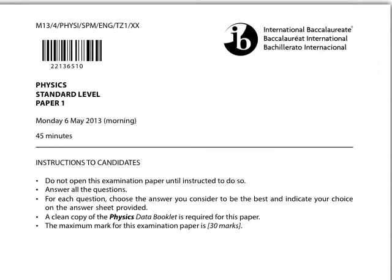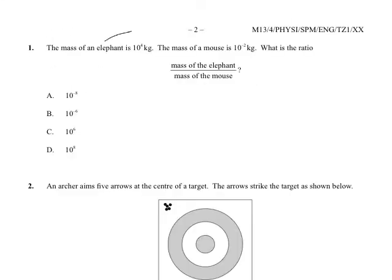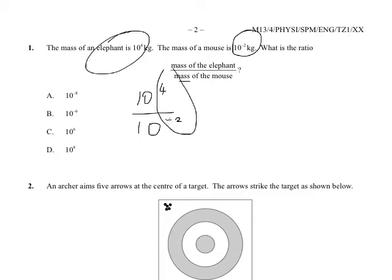Okay, so this is the mock paper, which happens to be May 2013. Please excuse the firecrackers outside, it is Diwali, and the fact that I've got a cold and I'm sniffing a lot. I'm going to start with question number one, which is a nice simple start. We have a mass of elephant ten to the power of four, and we're dividing it by the mass of a mouse, which is ten to the minus two. And we're subtracting indices because we're dividing, so it's four minus minus two, which becomes a plus, so it's four plus two, which equals six, which gives us an answer of ten to the power of six.